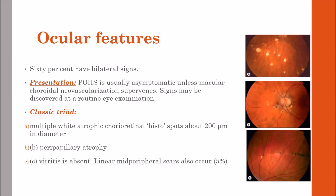There is a classical triad which consists of: first, multiple punched-out atrophic chorio-retinal histospots, which are about 200 microns in diameter, as shown in this figure. Second, peripapillary atrophy, as shown here. Third, the absence of vitritis and linear mid-peripheral scars, which occur in about 5% of patients, as shown in this figure. Such a clear picture can only be obtained if there is no vitritis. This is the classical triad.